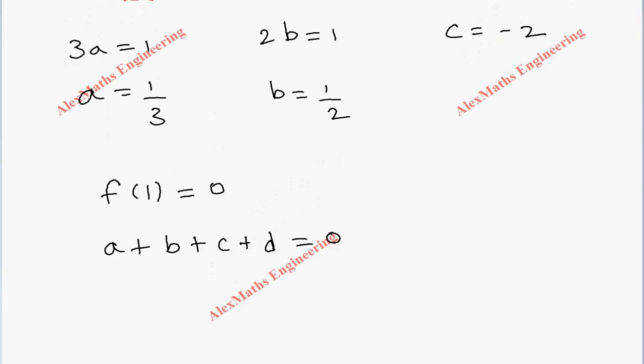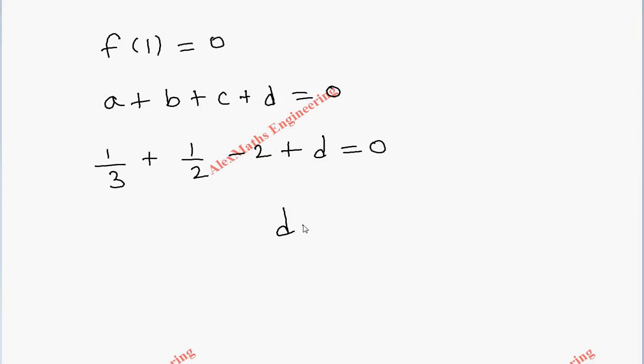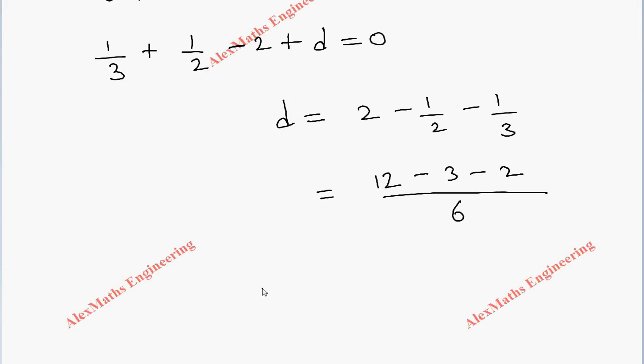And already we got the values of a, b and c here. So a will be 1/3, b is 1/2, and c is minus 2 plus d equal to 0. d equal to 2 minus 1/2 minus 1/3. So the LCM is 6. So the first term is 12 minus 3 minus 2. And finally, we get the value of d as 7/6.